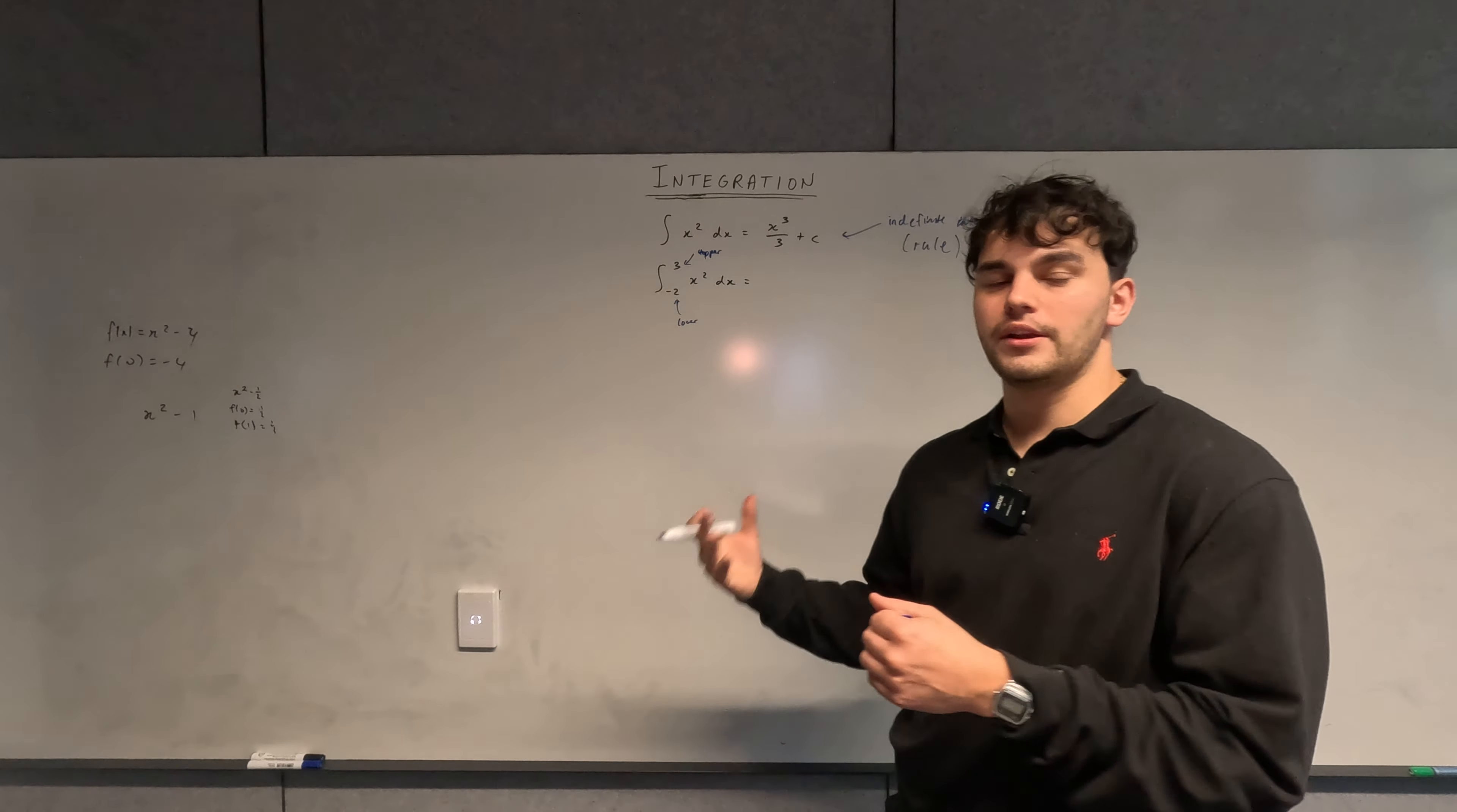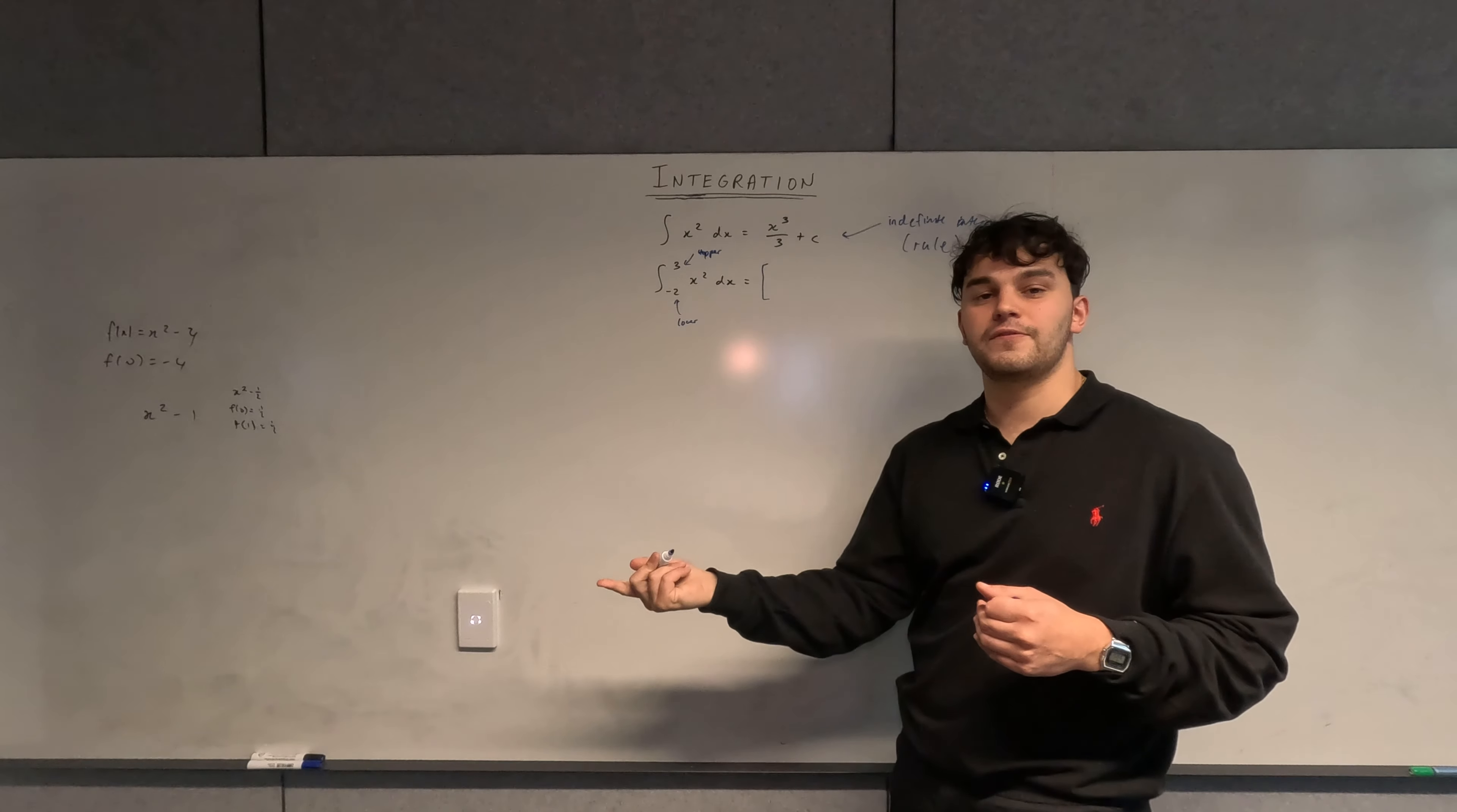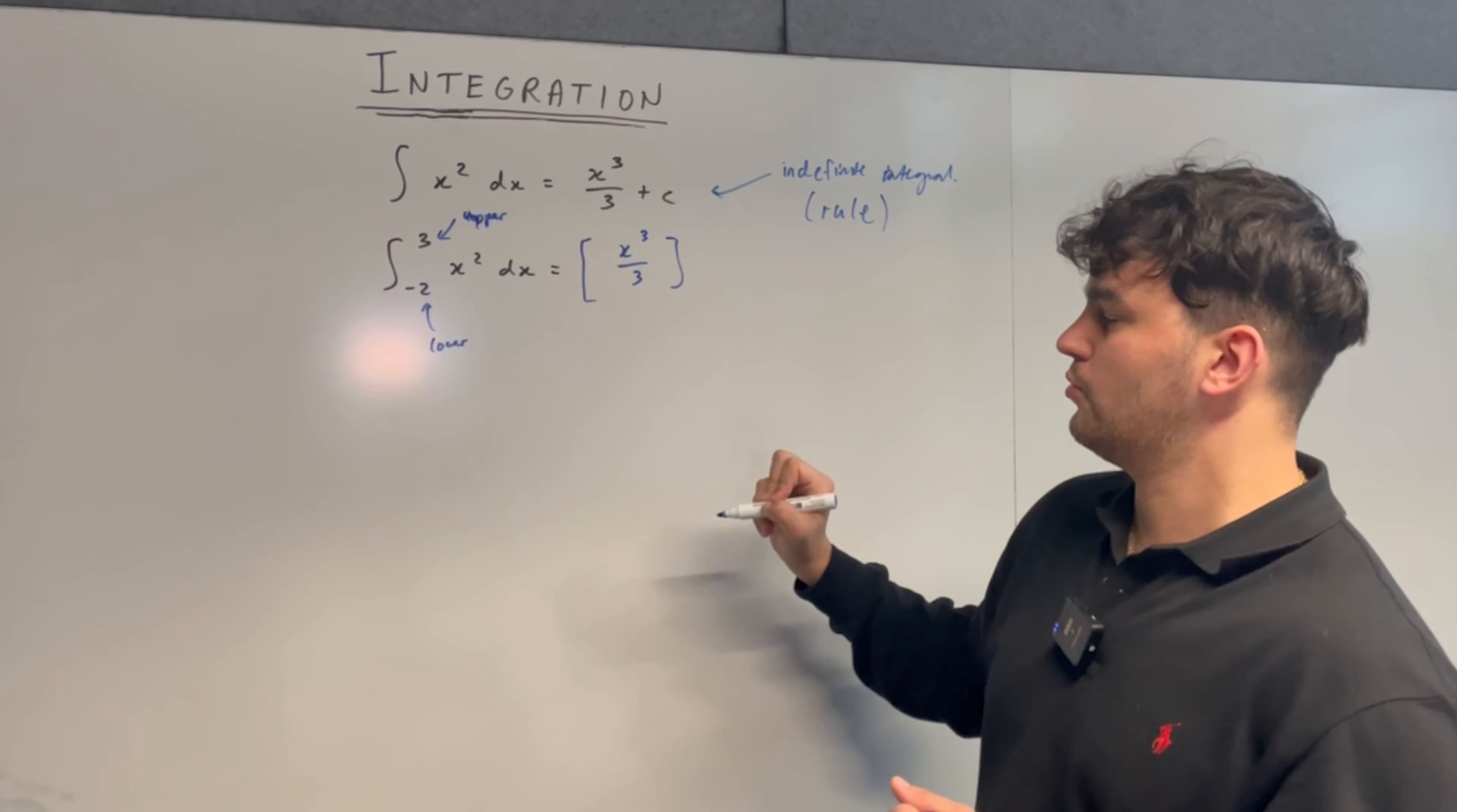Now the most important thing to understand is how we do it and the notation that we use. So the notation is we use square brackets to denote what the indefinite integral is and then we write the top and the lower bounds. So in this case the integral of x squared becomes x cubed over three, so we put x cubed over three into the square brackets.